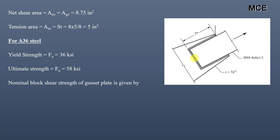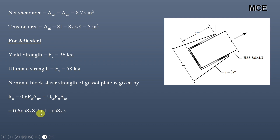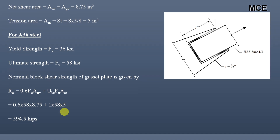The nominal block shear strength Rn = 0.6·Fu·Anv + Ubs·Fu·Ant. Substituting values: 0.6 × 58 × 8.75 + Ubs × 58 × 5. The shear lag factor Ubs for angles and plates in block shear failure equals 1, so Rn = 0.6 × 58 × 8.75 + 1 × 58 × 5, giving a nominal block shear strength of 594.5 kips.